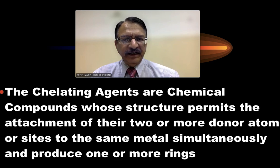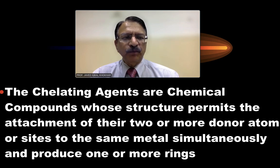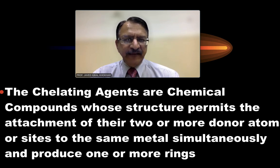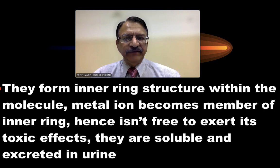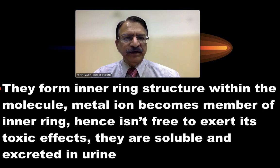Chelating agents are basically chemical compounds whose structure permits the attachment of two or more donor atoms or sides to the same metal simultaneously and produce one or more rings. They form an inner ring structure within the molecule, and metal ions become a member of the inner ring.